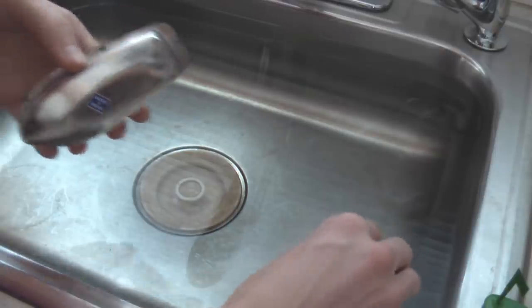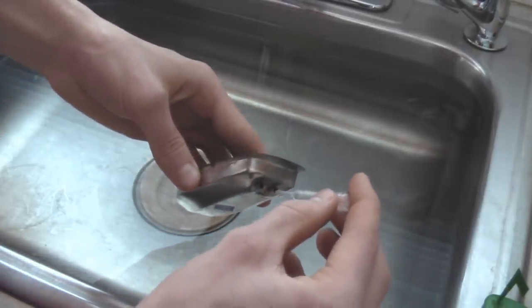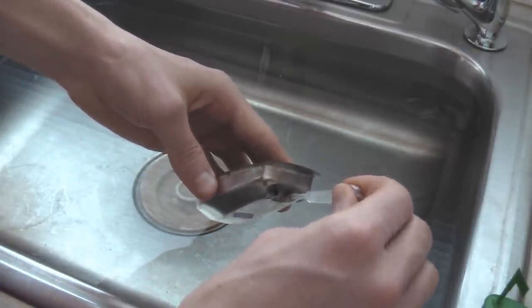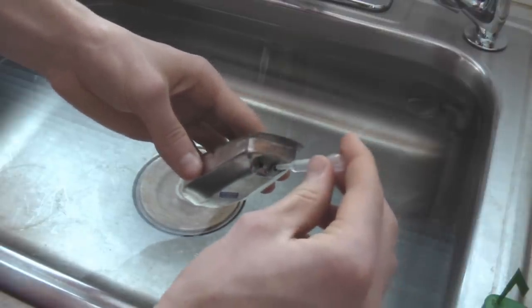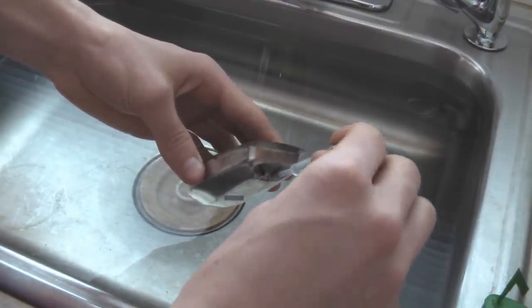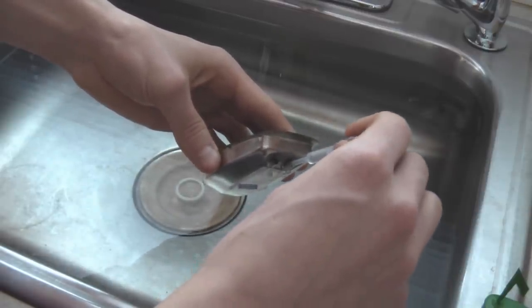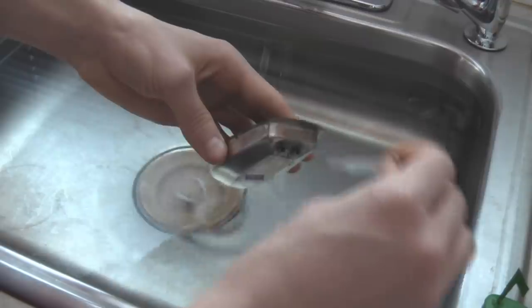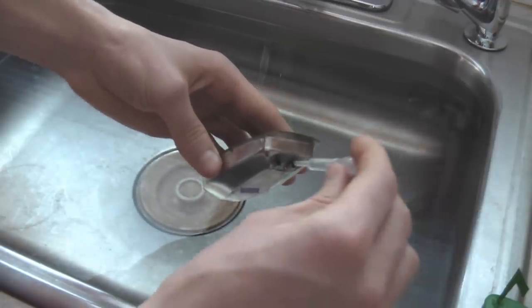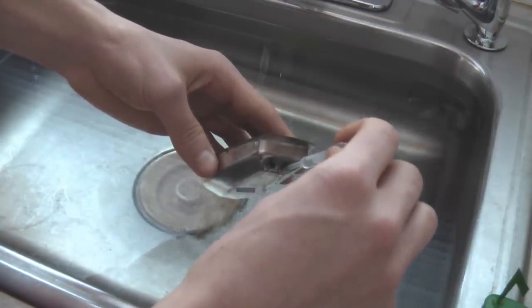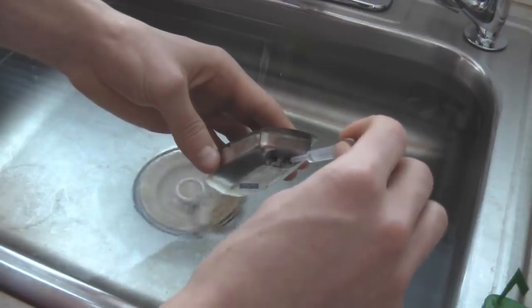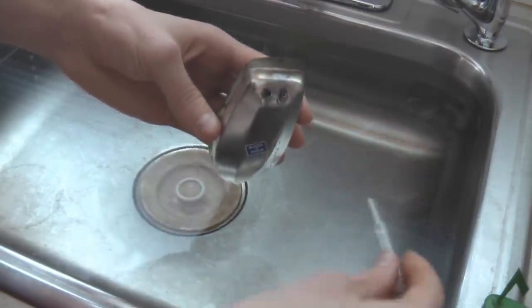So what you do is you just take your dropper and you fill it up with water. Basically, you just want to squeeze the water inside these tubes here until it starts coming out the other tube. There we go, like that. It doesn't take that long. You just want to make sure all the air bubbles are out. Okay, that looks pretty good.